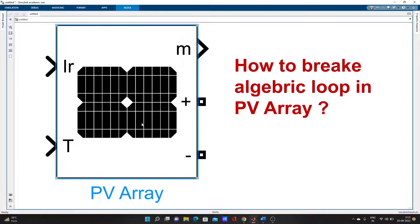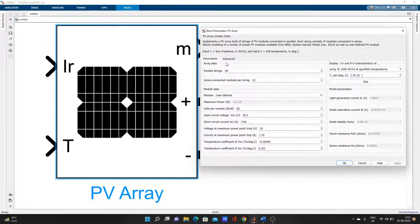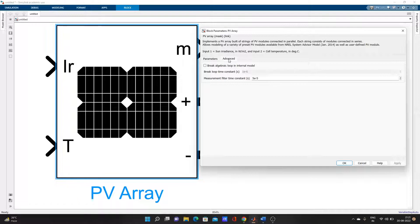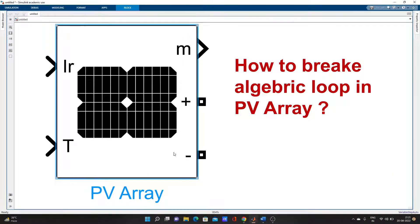Just double-click on this PV array, go to advanced options, and click 'break algebraic loop in internal model'. That's it - click Apply. Now that algebraic loop problem will not occur. Thank you guys, bye bye.